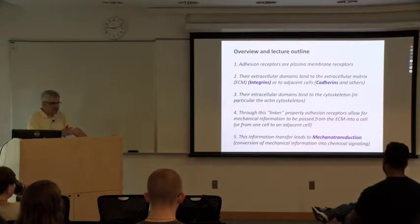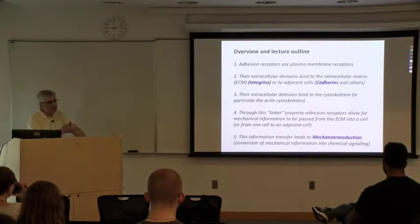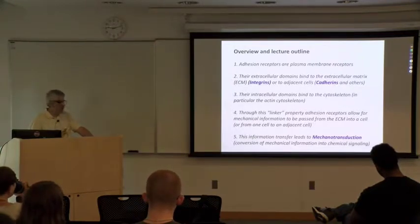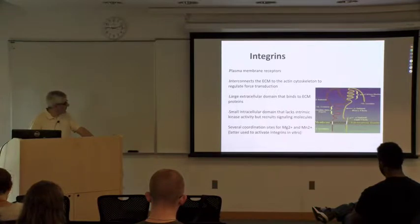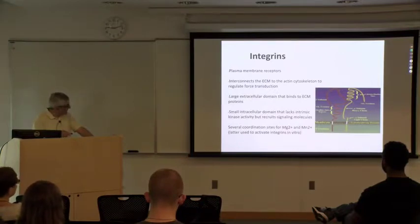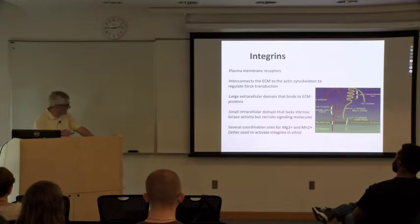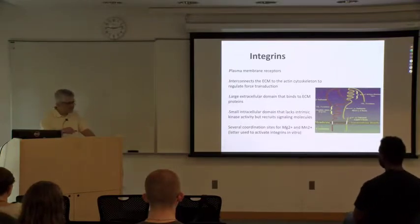Mechanotransduction is the conversion of mechanical information into chemical information. Sometimes mechanotransduction does not necessarily involve a chemical intermediate — a mechanical signal in the extracellular matrix could regulate the actin cytoskeleton and open pores in the nucleus, creating a simple mechanical signaling pathway. But in many cases, mechanical signals are transduced into a chemical signal. Integrins connect the ECM to the actin cytoskeleton, regulate force transduction, and sense the rigidity of the extracellular matrix — things like collagen and fibronectin.